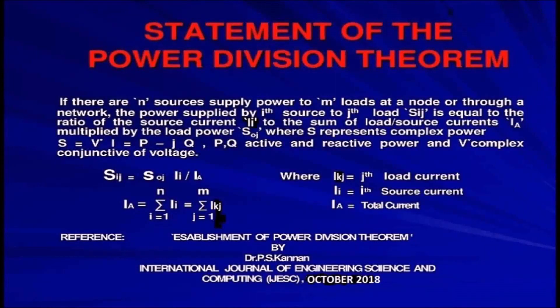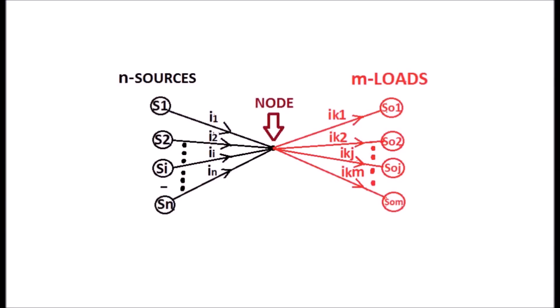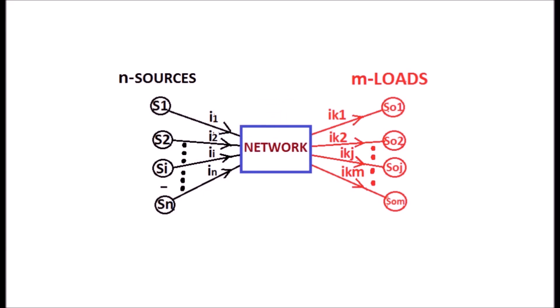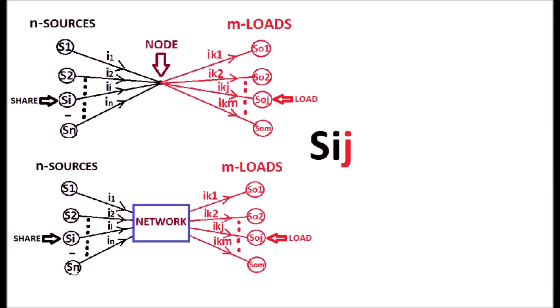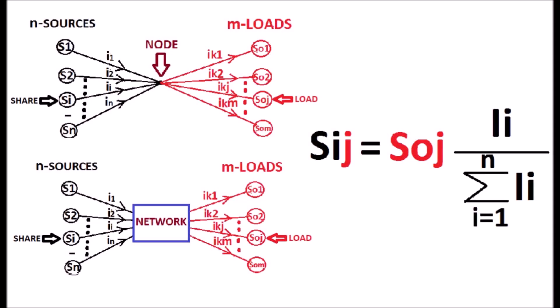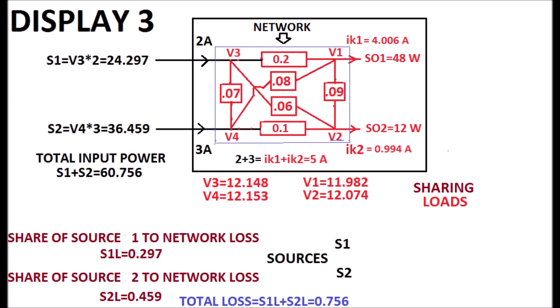As per the theorem, whether through a node or through a network, we have the share of the i-th source to the j-th load. Sij is equal to the j-th load power Soj multiplied with the ratio of the i-th source current Ii to the total of source currents sigma of I1 to N Ii, as shown in the equation. See the display.